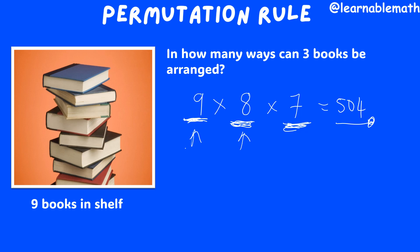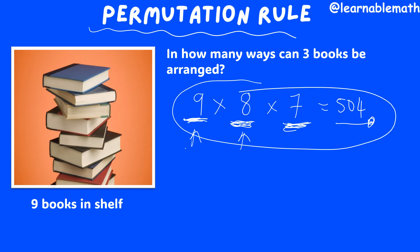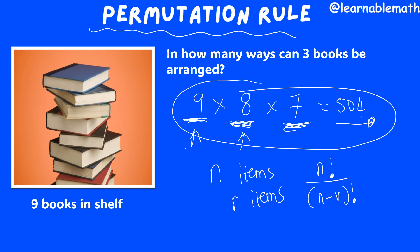Sometimes it might not be easy to do this manually, so we can use what we call the permutation rule. If I want to arrange a set of r things from a set of n things, there's a formula I can use. The formula for permutation says: if I have a total of n items and I want to select and arrange only r items from n, the number of ways is n factorial divided by (n minus r) factorial.